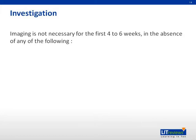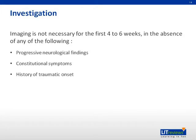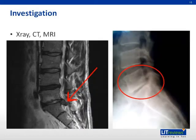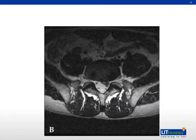According to the American guideline, imaging is not necessary for the first four to six weeks in the absence of neurologic findings, constitutional symptoms, history of traumatic onset, history of malignancy, age above 50, infectious risks such as injection drug use, immunosuppression, indwelling urinary catheter, prolonged steroid use, skin or urinary tract infection, or osteoporosis. If imaging is indicated, X-ray, CT, or MRI can be used, although MRI is most diagnostic. X-ray may show decreased intervertebral height, while MRI better visualizes the bulging disc and degree of nerve root compression.